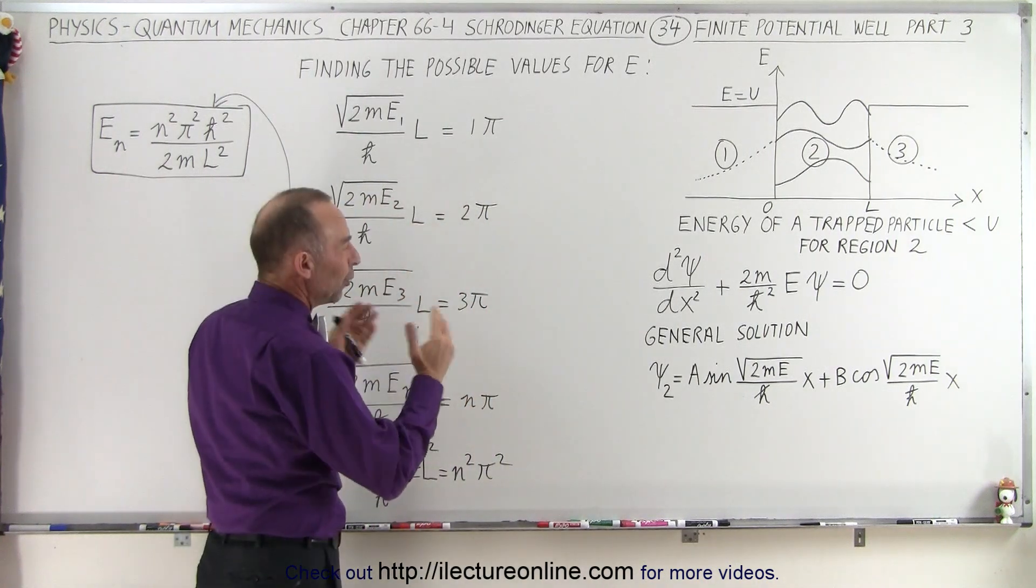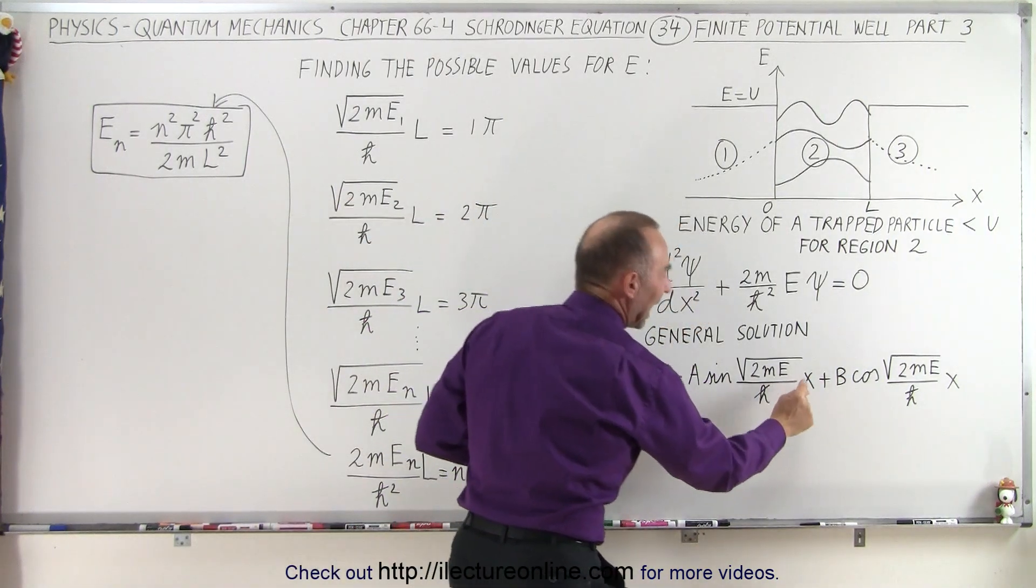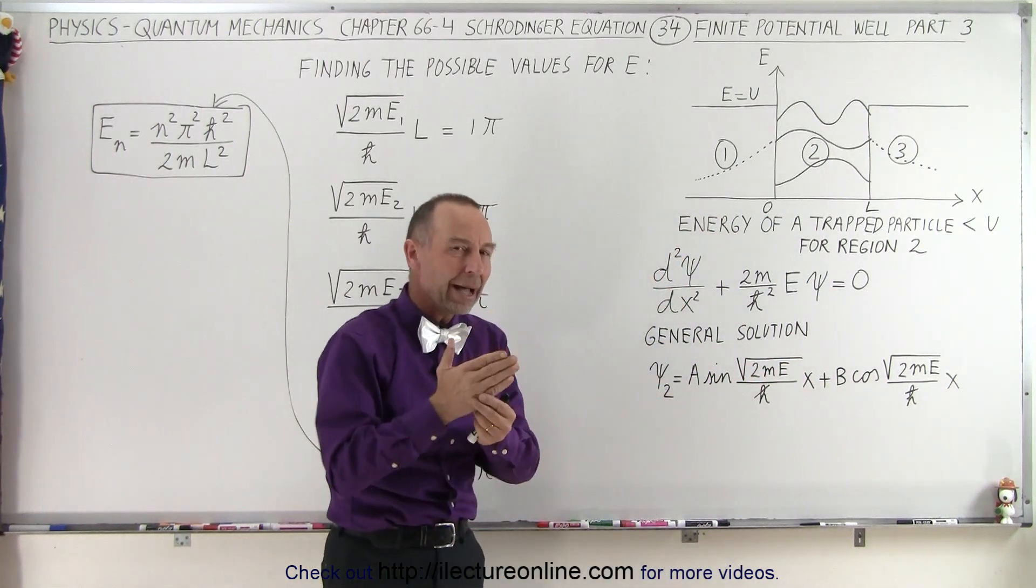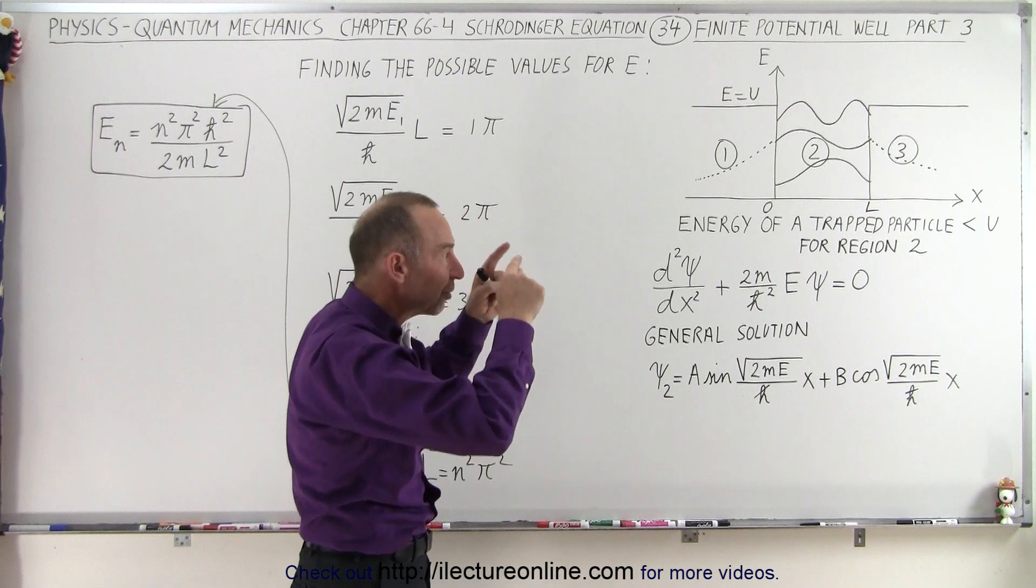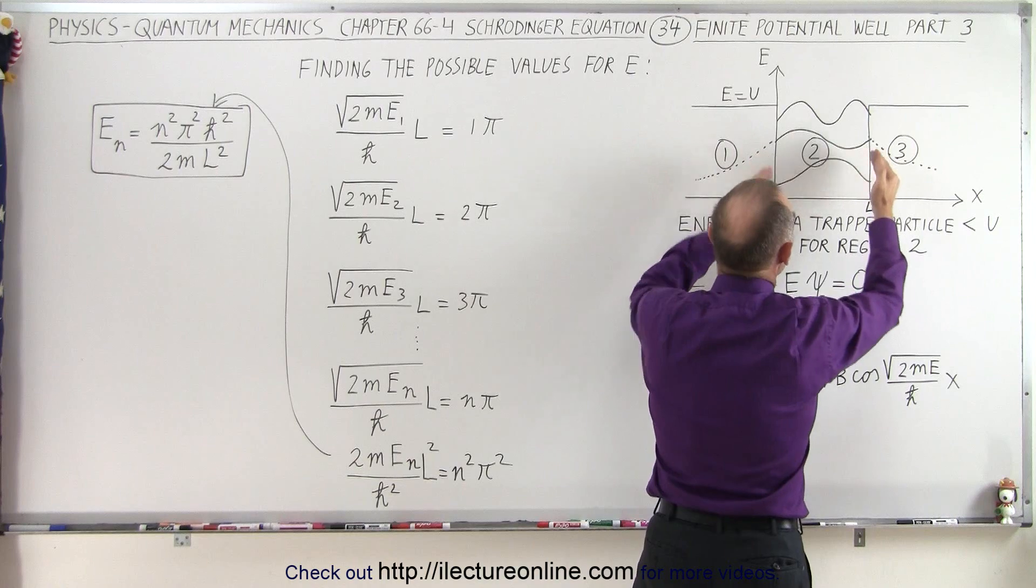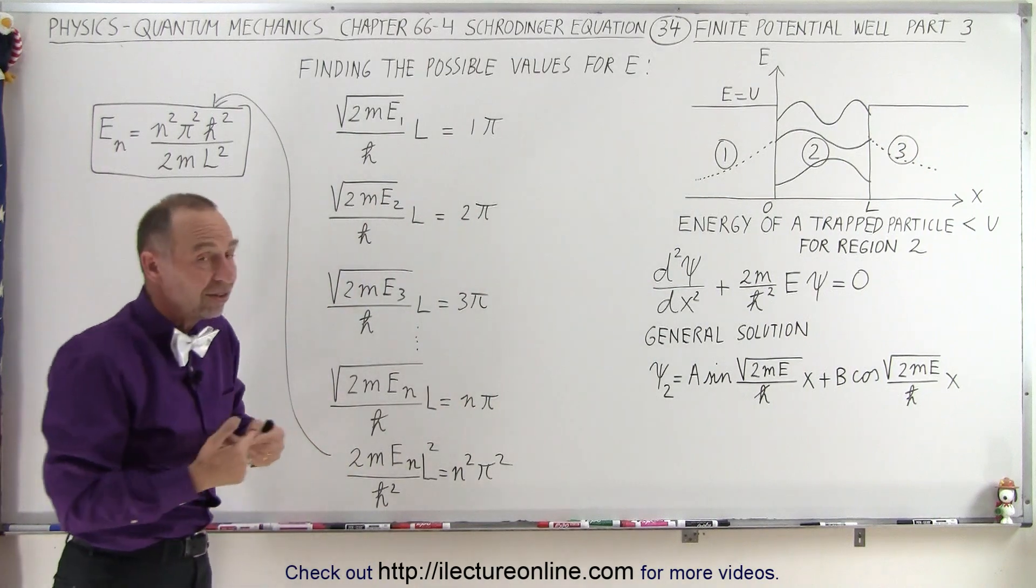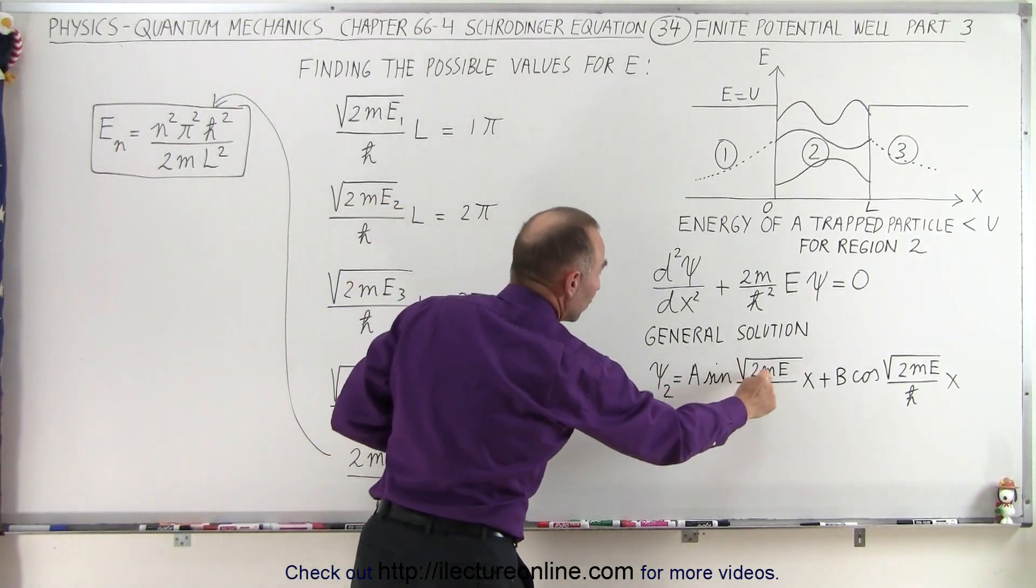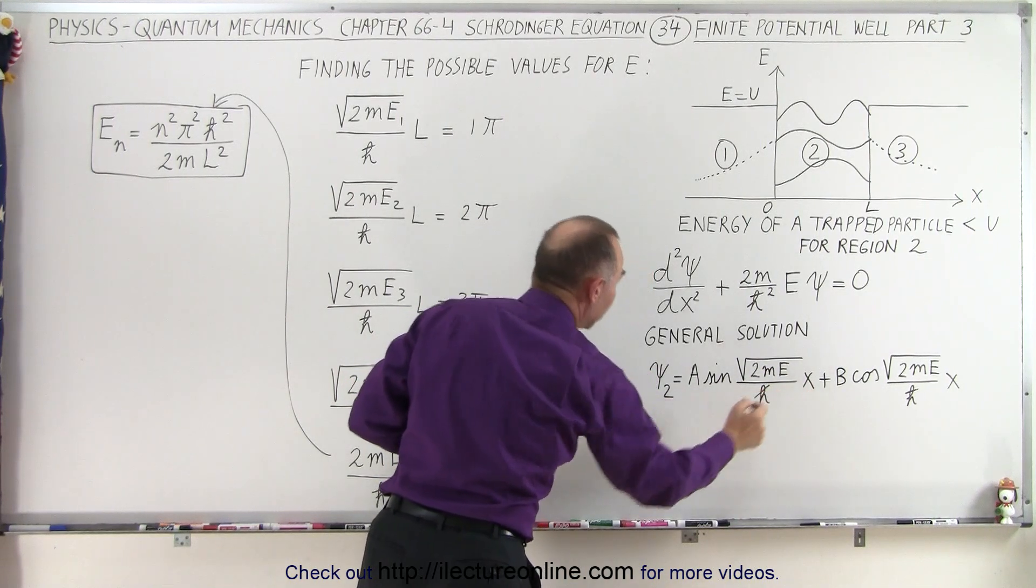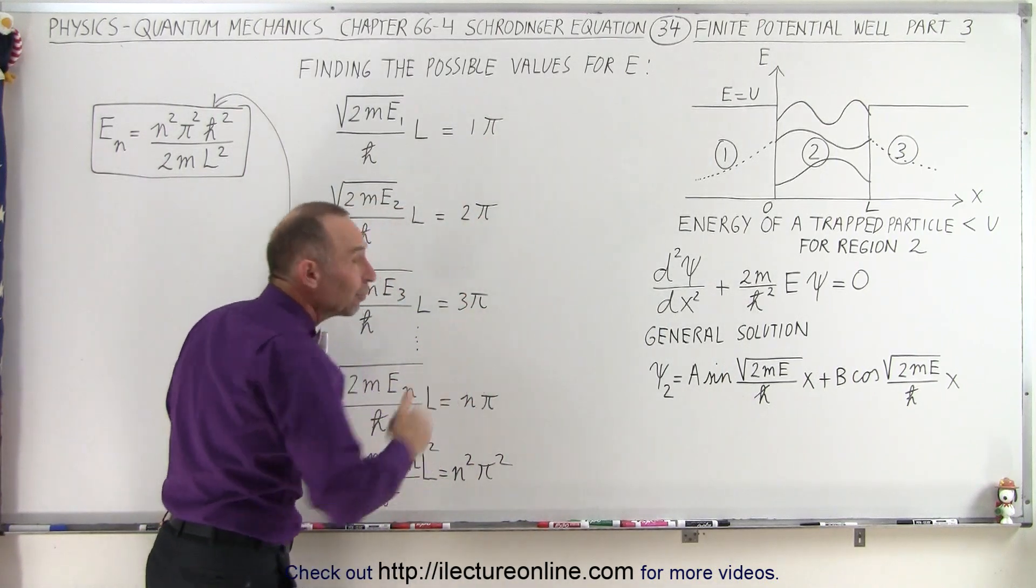In other words, the only way the functions can match up is if the argument of the sine and cosine when x equals L has to equal either 1π, 2π, 3π, or 4π. That's because the sinusoidal function in region 2 must match up with the exponentially decaying function in region 1 and region 3. This necessitates that the square root of 2mE divided by ℏ, times L, when x equals L, must equal 1π, 2π, 3π, or nπ.